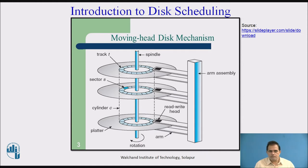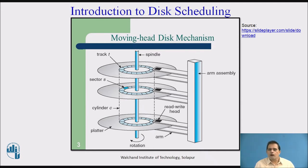But how do we reach the sectors? The disk controller has to go to the platter, then reach the surface. Suppose my data is on platter number 1, on the upper or lower surface. Each surface contains tracks. I have to find the correct track first, and then reach the particular sector to get the actual data. So the sequence of travel is: platter → surface → track → sector. The actuator arm, which is vertical in the diagram, helps accomplish this.